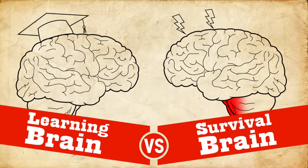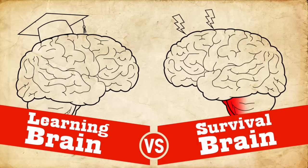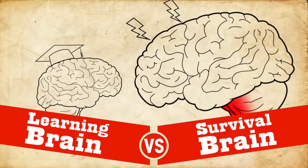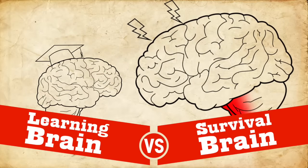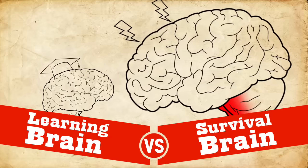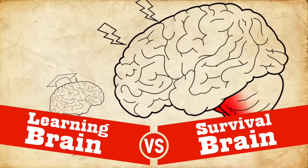Now it's really important to understand how learning brain and survival brain interact because survival brain always trumps learning brain. And it makes sense because survival brain is just trying to save your life. And so if it thinks that there's something dangerous happening, you better pay attention to it. But the tricky thing is that as survival brain stays on longer and longer, it's harder to get out of that and it's harder to really go into learning brain.